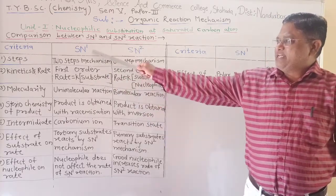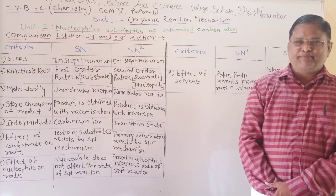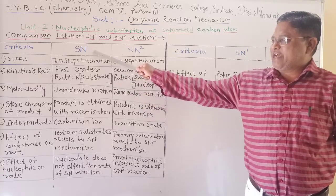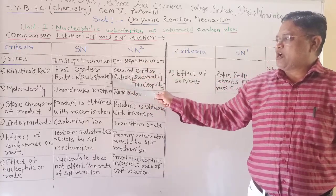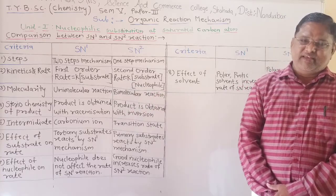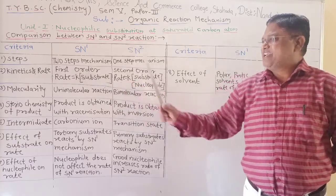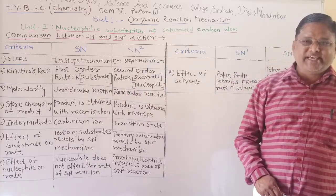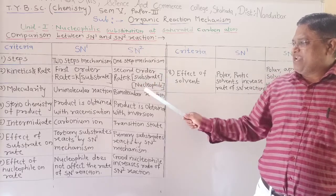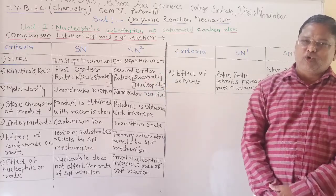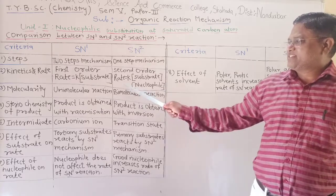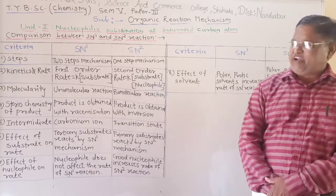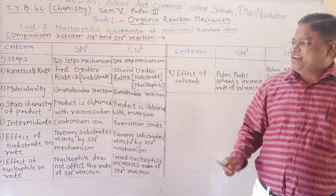The second criteria is kinetics and rate. In case of SN1 mechanism, in the slow step, only the substrate takes part, and therefore, the rate of SN1 reaction depends upon the concentration of substrate only, and it is a first order reaction. In case of SN2 reaction, in the slow step, both substrate as well as nucleophile take part. So the rate of this reaction depends upon the concentration of substrate and concentration of nucleophile. It is a second order reaction.